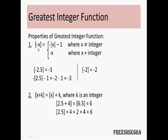The greatest integer of negative x equals minus of (greatest integer of x minus 1) if x is not an integer, and minus of x if x is an integer. For example, for -2.5: since it is not an integer, it is calculated as minus of (greatest integer of 2.5) minus 1, which is minus 2 minus 1, equals minus 3. For -2, since 2 is an integer itself, the greatest integer value is minus 2.